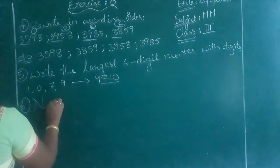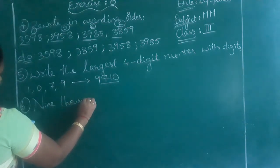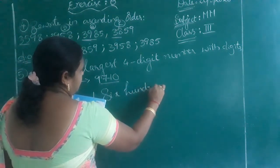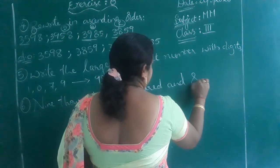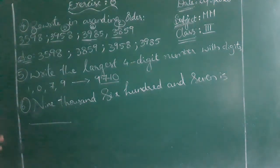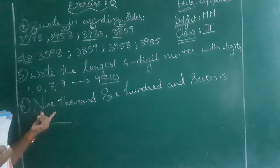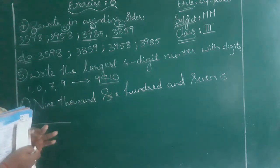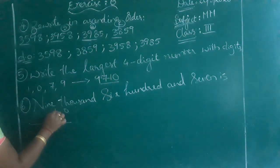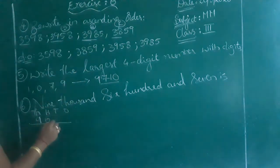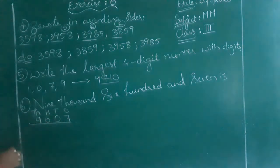Next: write the number using this number name — they are asking 9,607. You have to place values up to thousands only. So, how many thousands? 9,000. Next: 600. And then 7. So the number is 9,607.